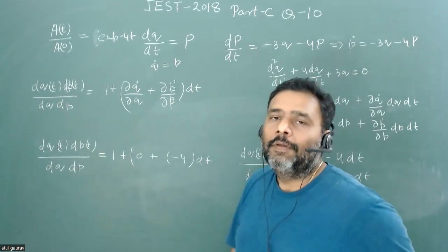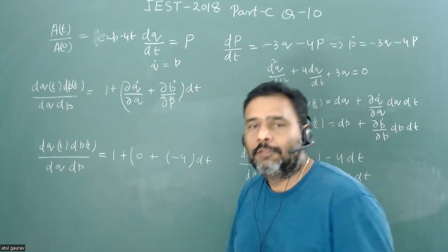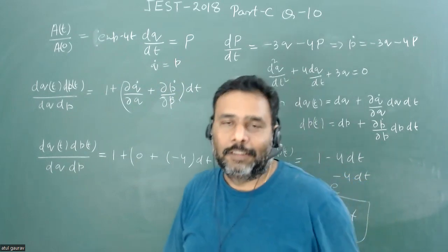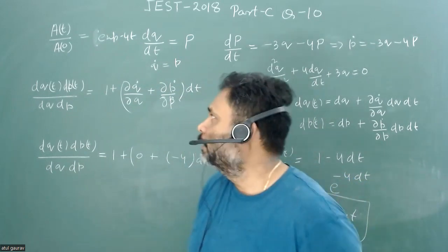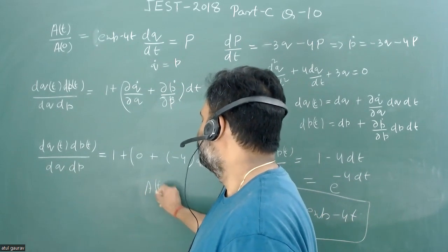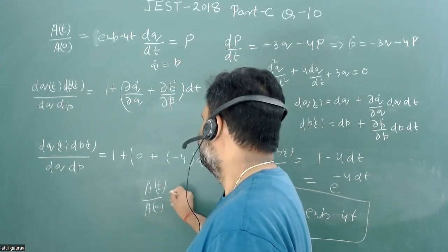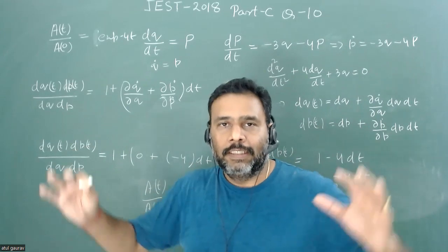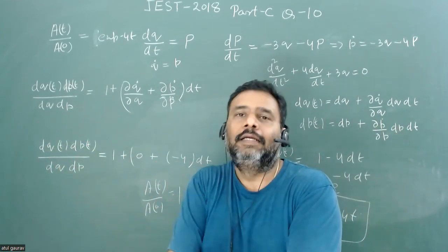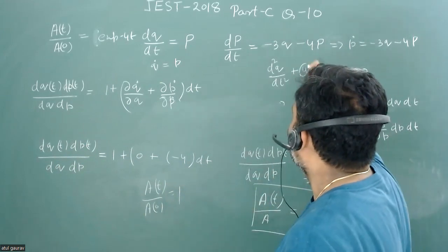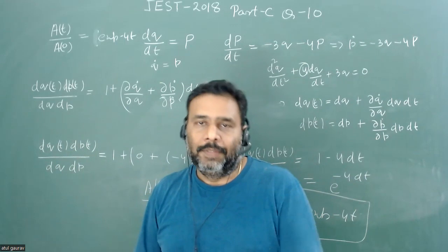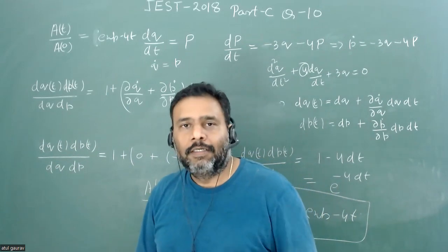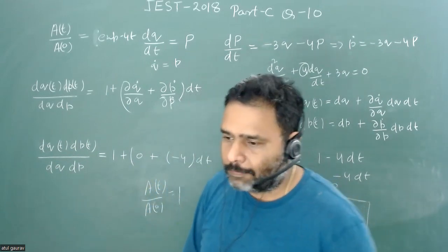This method can be applied to any problem if you know the relationship between q̇ vs. q and ṗ vs. p. Try applying it to the harmonic oscillator — you'll find A(t)/A(0) = 1, meaning the phase area is conserved. Here the phase area decreases exponentially with time constant 4, associated with the damping constant. This is a wonderful problem — try it yourself for your JEST examination.